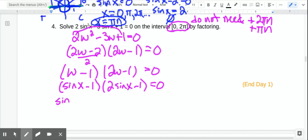So now we're going to set both of these factors equal to 0. So either sine x is equal to 1, or when we set this one equal to 0, sine x is 1 half.